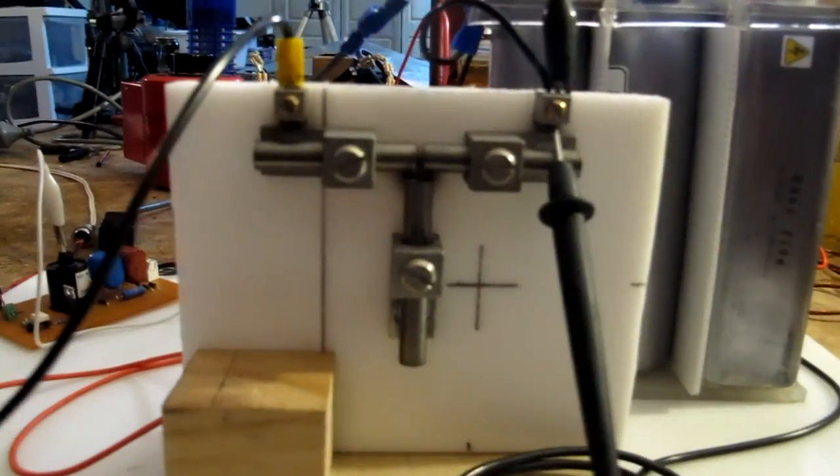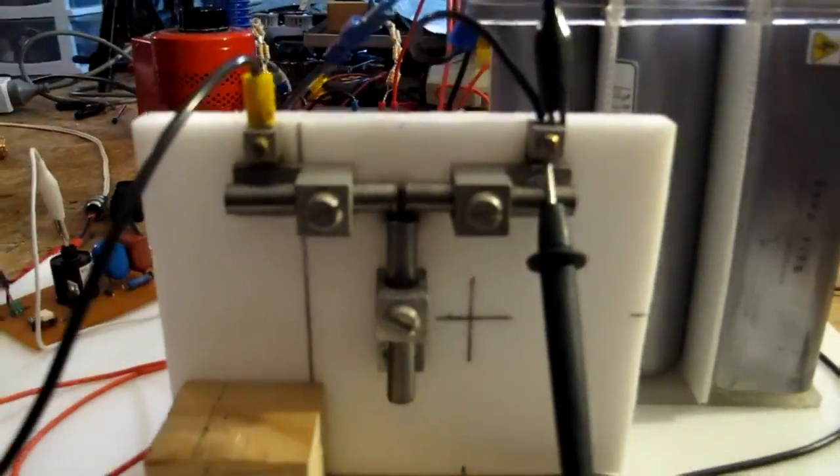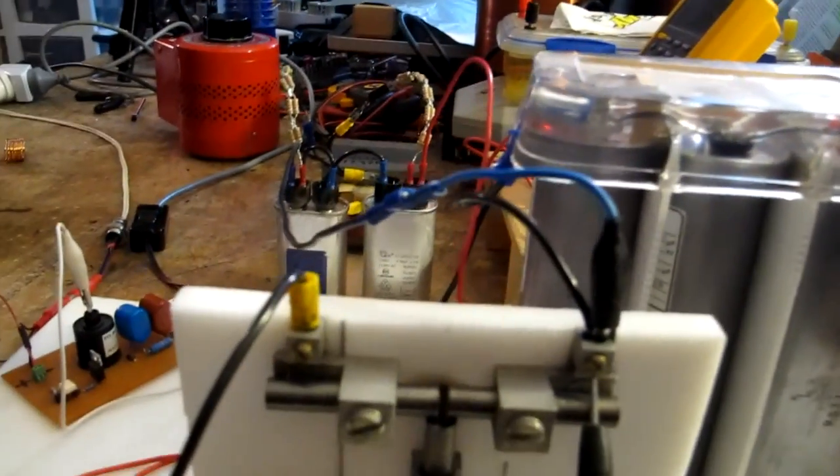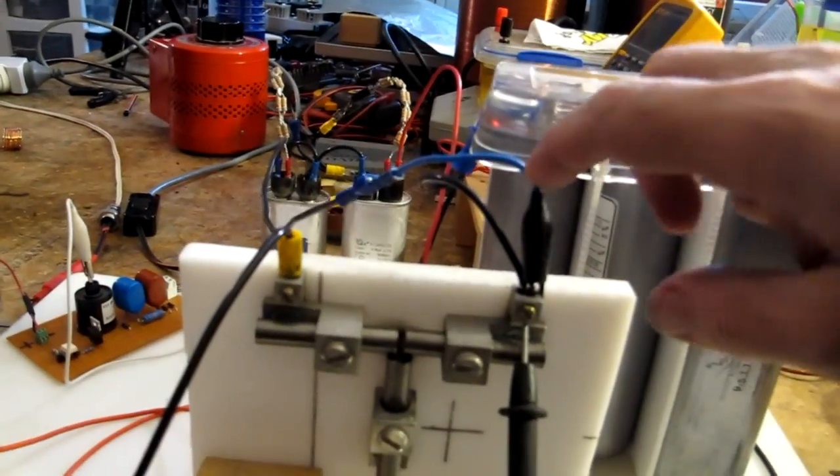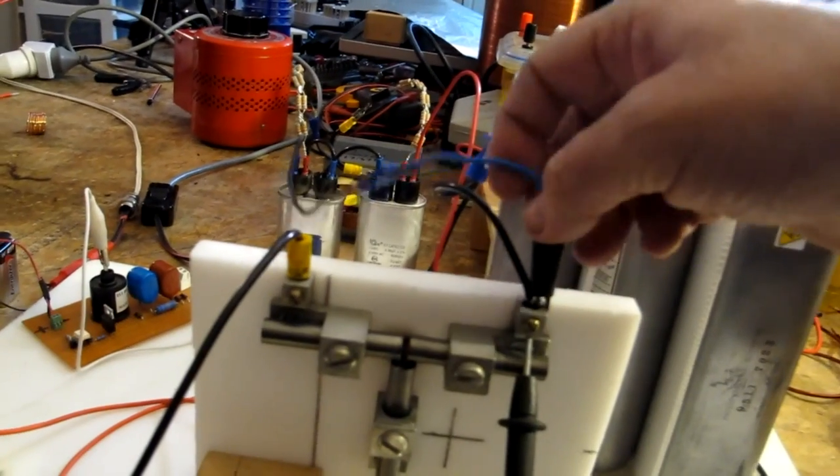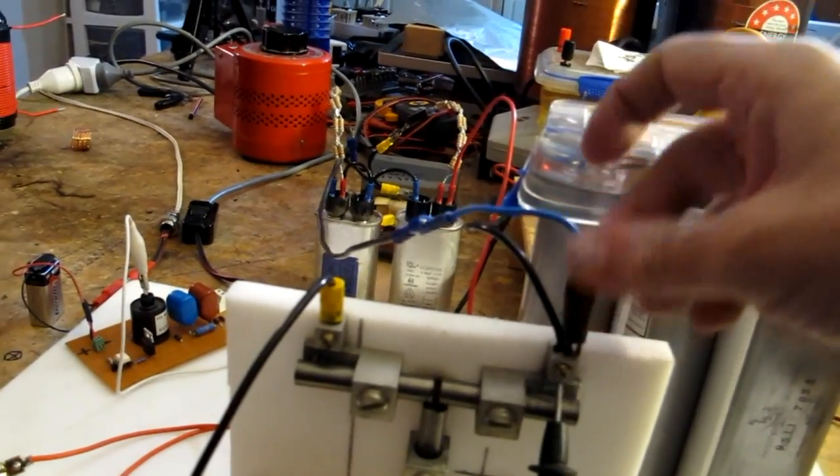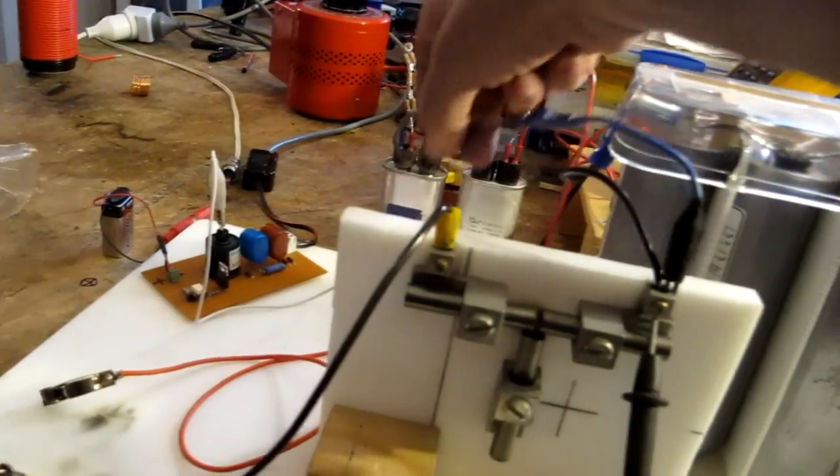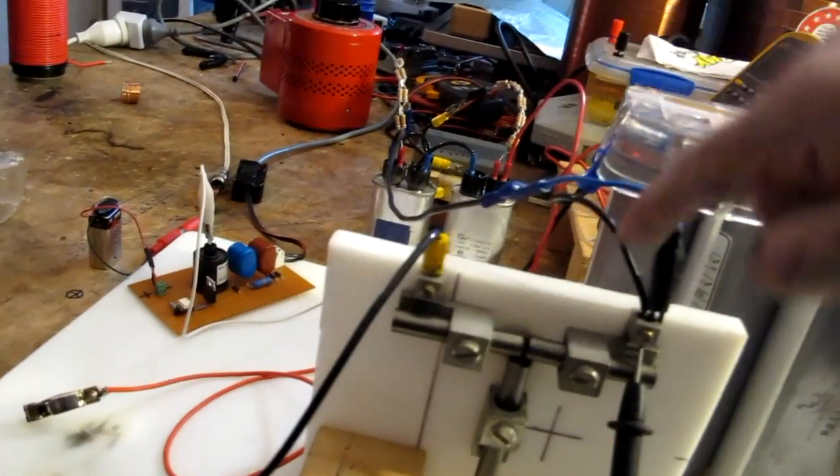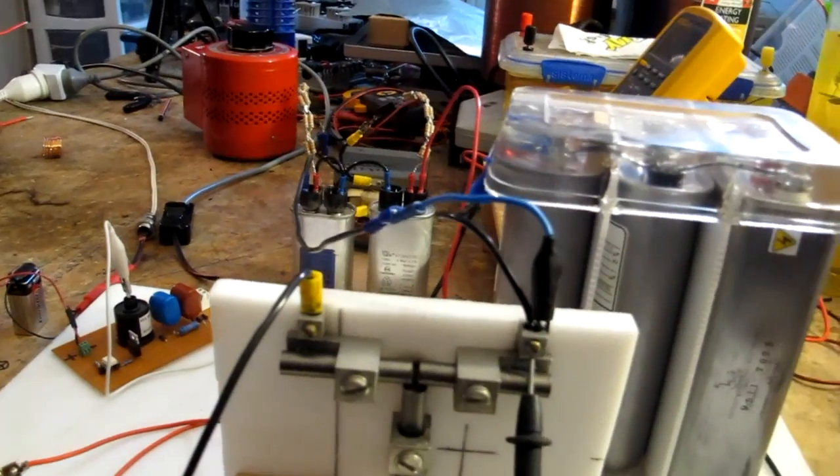This is the spark side of the triggered spark gap. So basically one side of the output from the capacitors goes onto here. I also have the input I've put onto there because that was just a nice handy point for the alligator clip to go. There's not a huge amount of current going through this bit. This one takes a lot but only for very, very short periods of time.